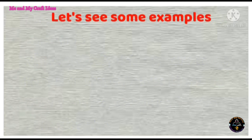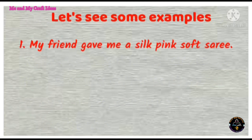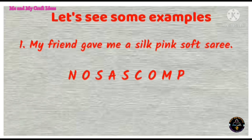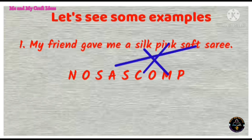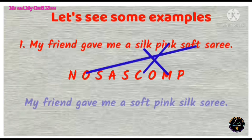Let's see some examples. My friend gave me a silk pink soft saree. Here we can apply the acronym NOSAS COMP. Silk is a material, pink is color, and soft is opinion. So the correct adjective order is: my friend gave me a soft pink silk saree.